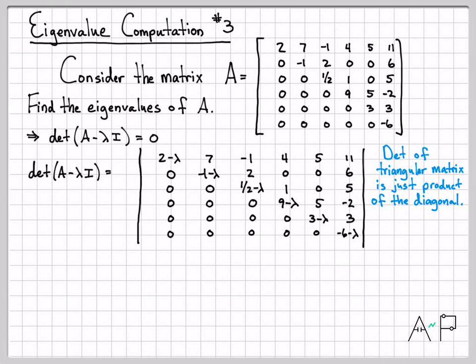If you were to do cofactor expansion about this first row, you would see that many of the entries are going to end up being zero. As we do our expansion, all these zeros down here are going to result in a lot of zero terms. If you choose your cofactor expansion wisely, you'll see that the determinant ends up being just the product of all of these diagonal elements.